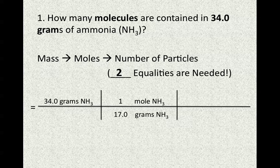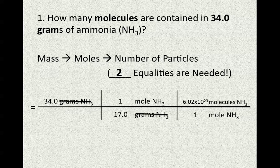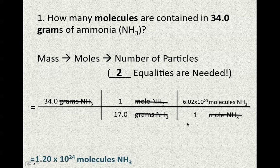Now we've gotten it in moles, and we need to go from moles to the number of particles. Because moles is in the numerator, we put moles in the denominator of our next conversion factor. Looking at our flow chart, 1 mole of NH₃ equals 6.02 times 10 to the 23rd molecules of NH₃. Crossing out units in both numerator and denominator, grams and moles cancel, leaving us with molecules of ammonia. Multiplying across the top and dividing by the bottom, we get 1.2 times 10 to the 24th molecules of ammonia.